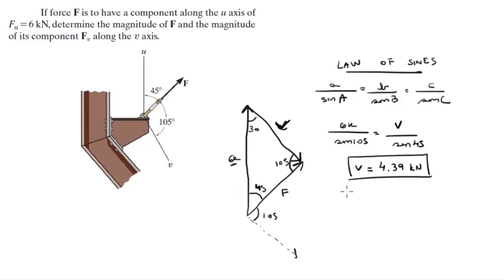And then you do the same thing to find the total force, which 6k over sine of 105 is equal to F over sine of 30. F is equal to 3.11 k newtons.